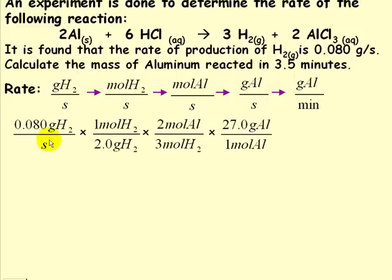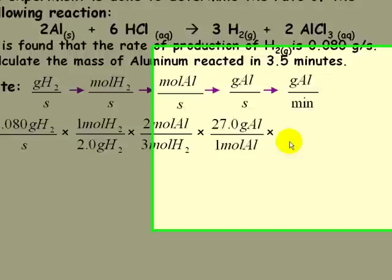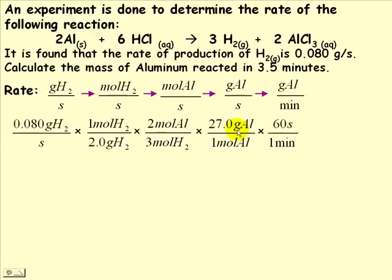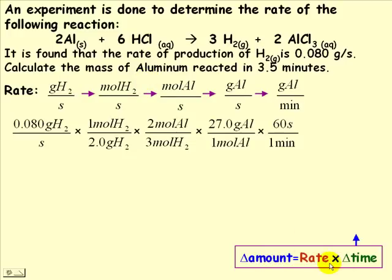This gives us grams of aluminum per second. Since we're dealing in minutes, we convert seconds to minutes by multiplying by 60 seconds per minute, putting seconds on top to cancel and minutes on the bottom. This gives us the rate of reaction in grams of aluminum per minute. To find the actual mass of aluminum — an amount — we recall that amount equals rate times time, so we multiply this rate by 3.5 minutes, and cancel out all units.